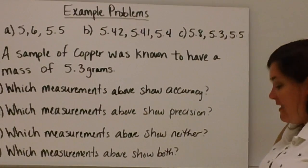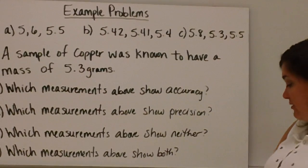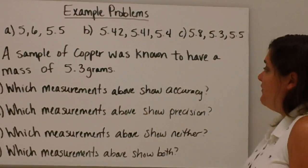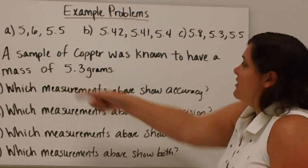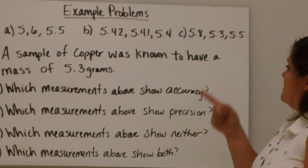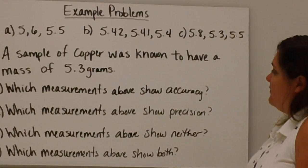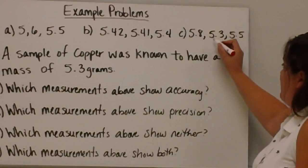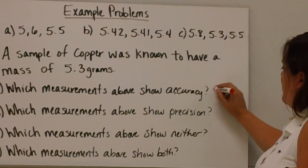Remember, accuracy is how close you are to the true value. So the true value was 5.3. Which of these is closest to 5.3? Well, it's the one that has 5.3 in it. So that option would be C.